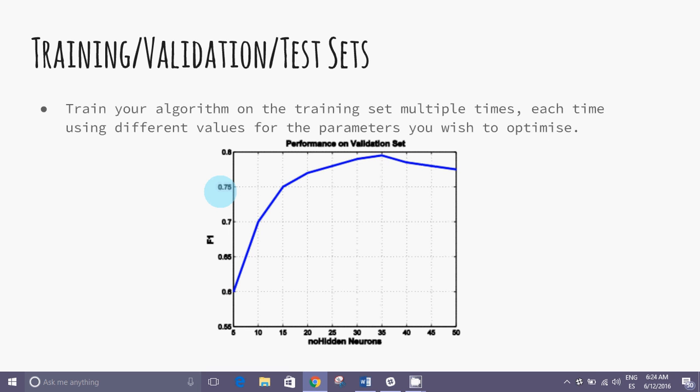Once we selected the parameters to be optimized, we trained our model several times, varying in each pass the parameter values that we want to optimize. For each training classifier, evaluate the performance on the validation set using the performance measure we have selected before, F1 in our case. Graphic representation of performance on the validation set as function of the parameter values, so in our case, the number of hidden neurons in our example of neural networks.